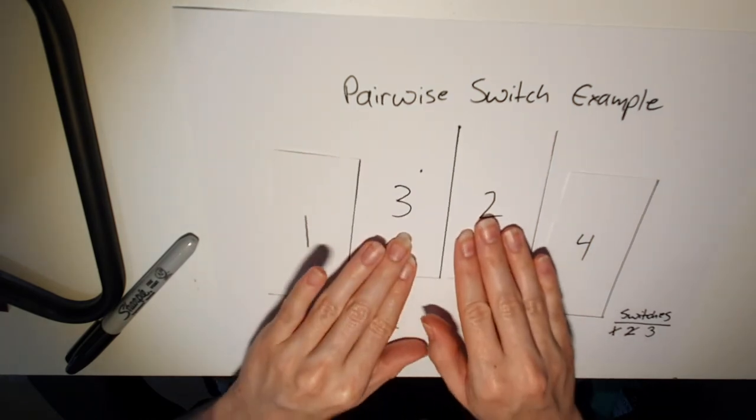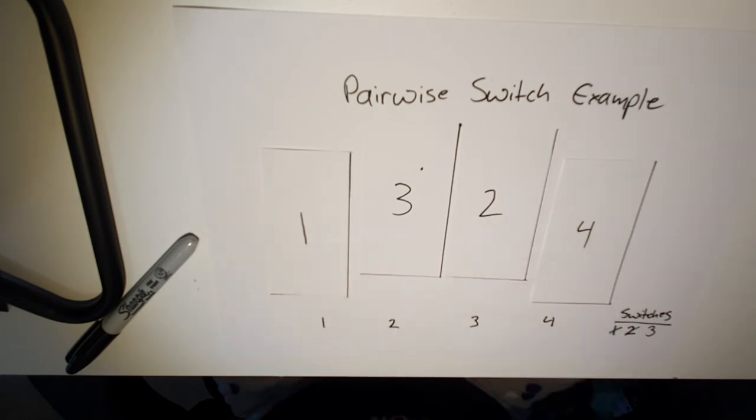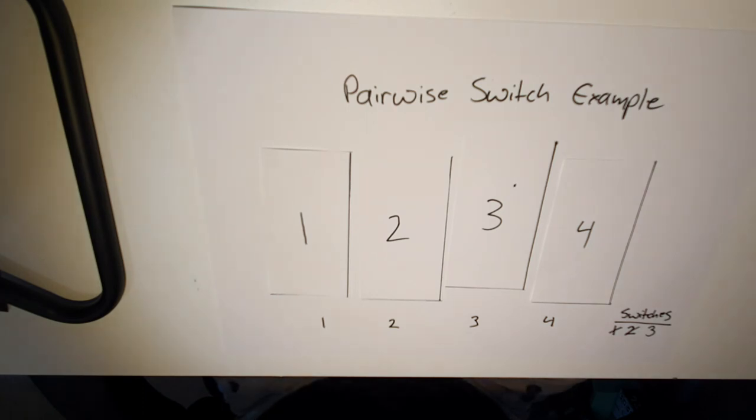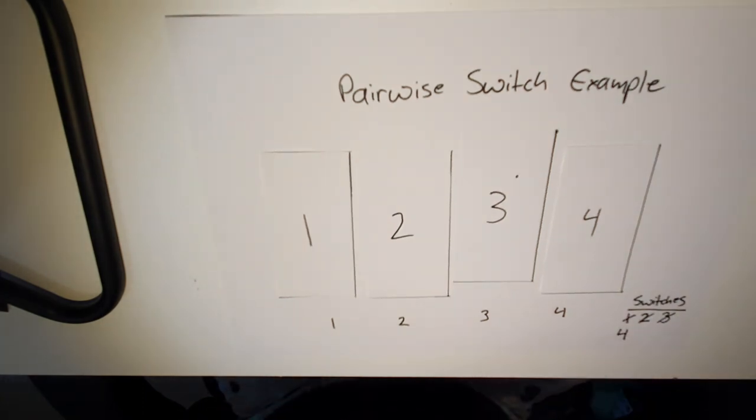Then we look at the next pair. Is three less than two? It's not. So we swap them around. And we add one to our switches tally, making it four switches.